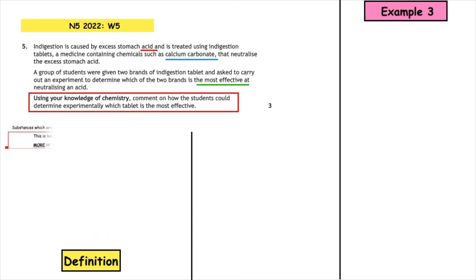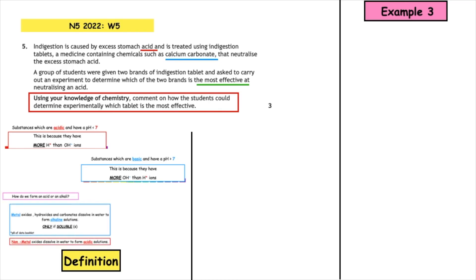Example number three. For our definitions you could give the definitions of an acid and a base. So acids when they have more H+ ions than OH- ions, a base is when we have more OH- ions than H+ ions. And we could talk about how we form acidic or basic solutions, and that is when we have metal oxides, hydroxides, and carbonates which dissolve in water to form an alkaline solution. And that's only if they're soluble, so you would need to use page eight of your data booklet. And non-metal oxides would dissolve in water to form acidic solutions. So therefore calcium carbonate must be a base when you use page eight and the fact that it's a metal carbonate.